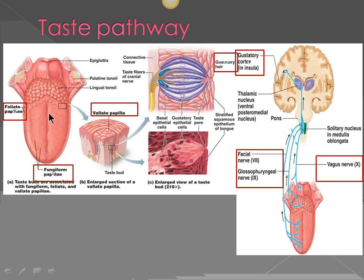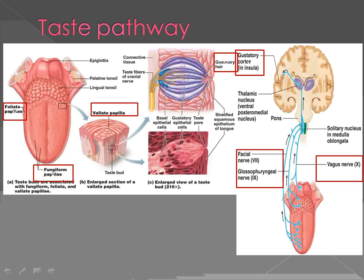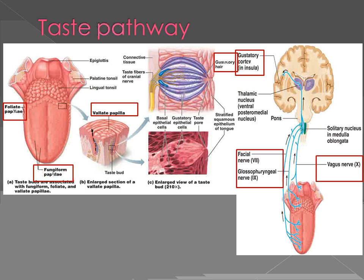Then we have foliate papillae, present mainly on the sides of the tongue — these also have taste buds. At the junction between the anterior two-thirds and the posterior one-third, you have these papillae called valate or circumvallate papillae. These are the fewest. A circumvallate papilla is a rounded papilla lying in a deep indentation, like a moat surrounding it. In the walls is where you have the taste buds. Food drops down into the moat, where saliva makes it into solution form, stimulating these taste buds, which are then carried to the gustatory cortex.